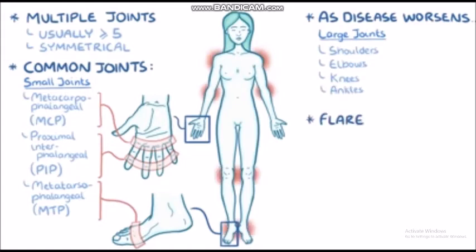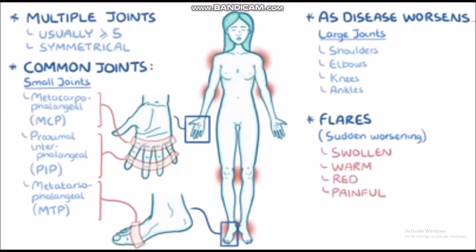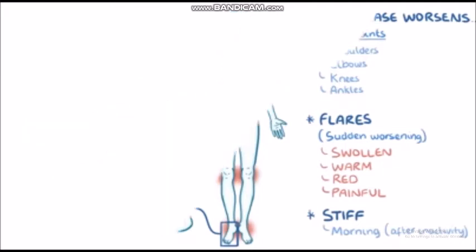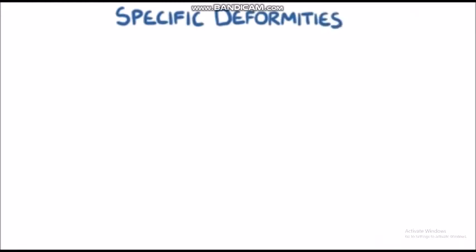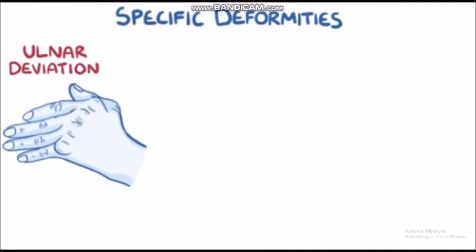During flares, or a sudden worsening of the disease, the affected joints get extremely swollen, warm, red, and painful. Over time, they become stiff, especially in the morning or after being inactive for a prolonged period of time. People with rheumatoid arthritis may develop specific deformities, usually of the metacarpophalangeal joints of the hand, such as ulnar deviation of the fingers.